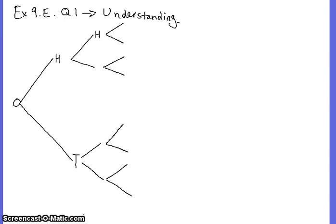What a tree diagram does is it represents all the possibilities that could happen when you do something. In this case, it's tossing a coin three times. Imagine this here is your coin — when you toss it, the possible outcomes are a head or a tail.